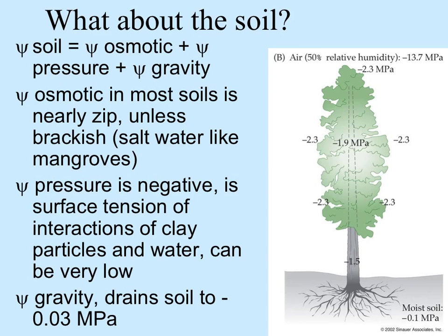The water potential of soil also has different components. The osmotic potential in most soils is almost zero, unless the soil is brackish and salty. The pressure potential is negative, made up of surface tension from the interactions of soil particles and water. The gravity potential causing water to drain is quite small, about 0.03 megapascals. In moist soil, water potential is very slightly negative, almost zero, and as you go up a tree it becomes more and more negative — but compare that to the air potential and you can see why water is drawn from the tree out to the air.